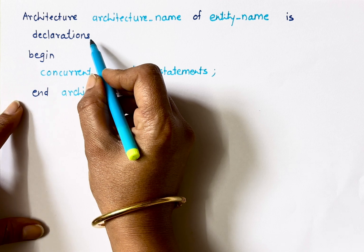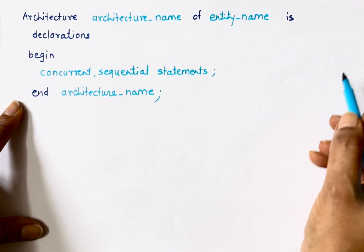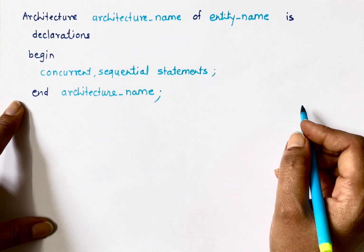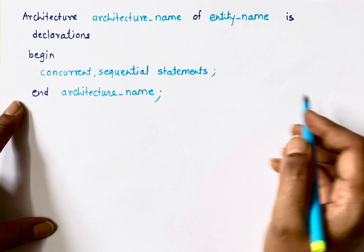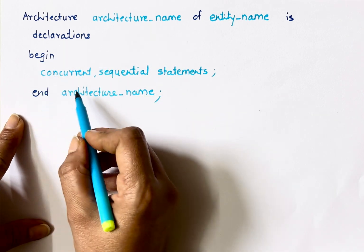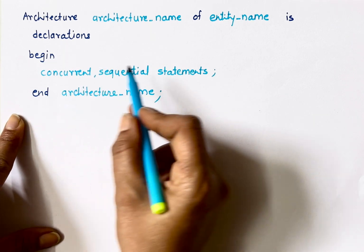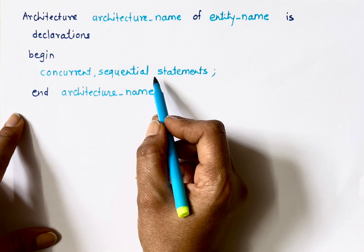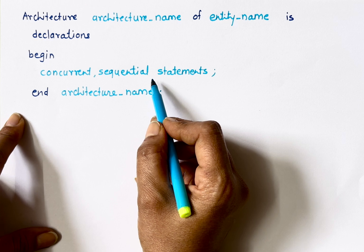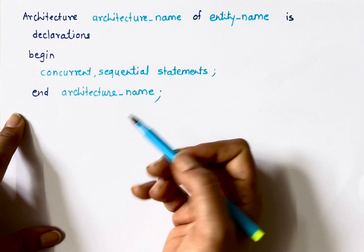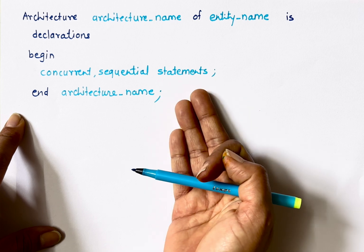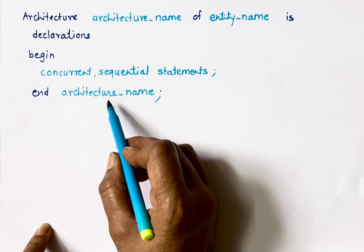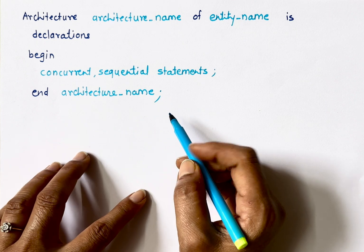In the declarations section, we declare intermediate inputs and outputs — not just the external ones declared in entity. Then after 'begin', we can use concurrent or sequential statements based on the modeling style. There are three modeling styles: data flow, behavioral, and structural. Separate videos on modeling styles are available on the channel.